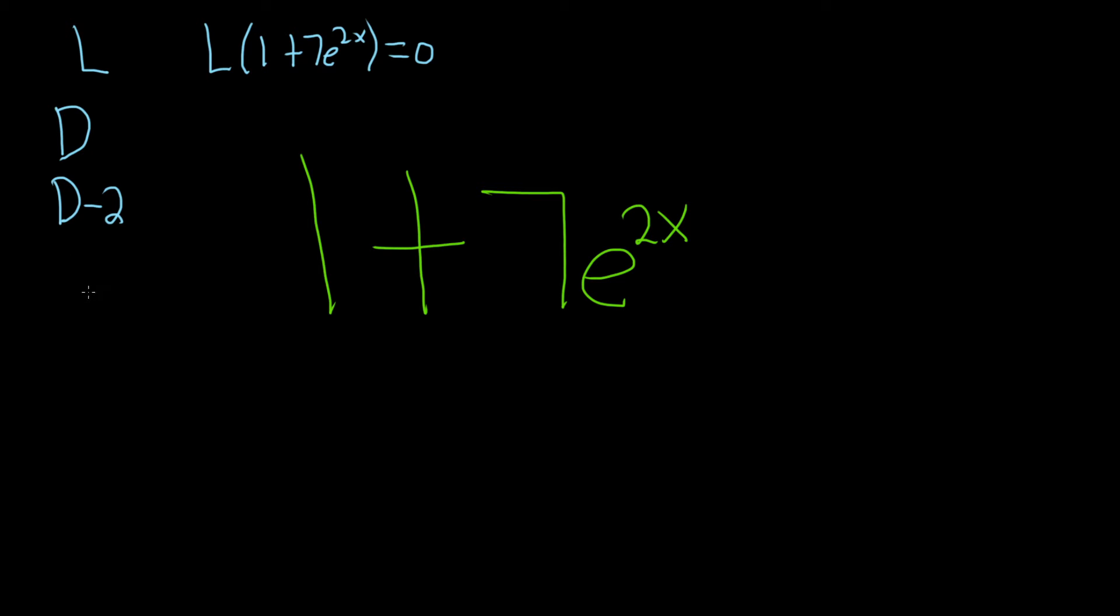That will always work in general. If you have e to the alpha x, you can use D minus alpha, and that will completely annihilate this piece. So let's go ahead and verify that our answer is indeed D times D minus 2. That's what the answer is to this question.